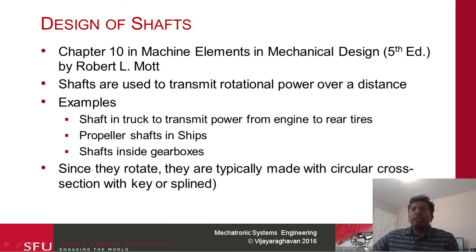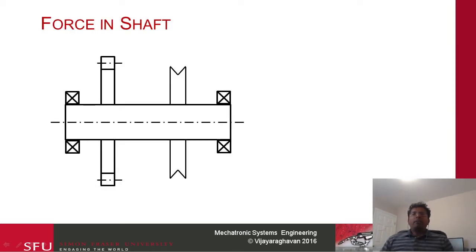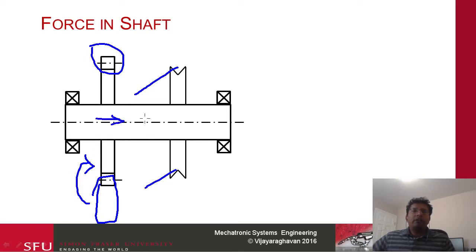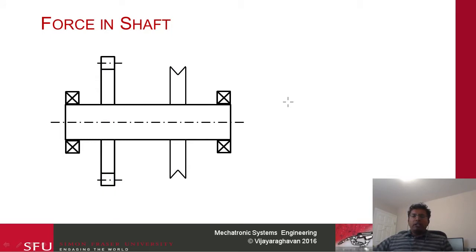Since shafts rotate, they need a circular or circular cross-section — they could be splined or keyed. Here is a simple shaft example: imagine a gear on one side with teeth, a belt coming out of the screen, and another interfacing gear. Power transfers from the first gear into the shaft, travels along it, and exits through the belt on the other side. This illustrates the power flow through a shaft setup.